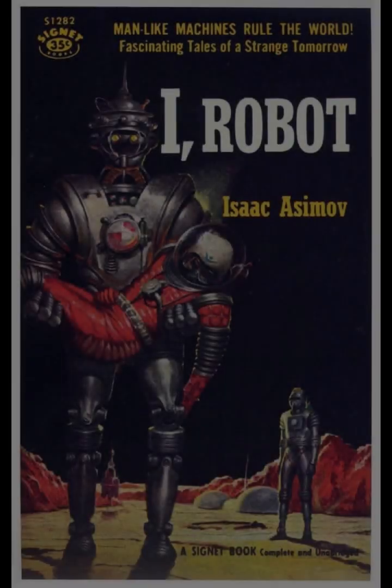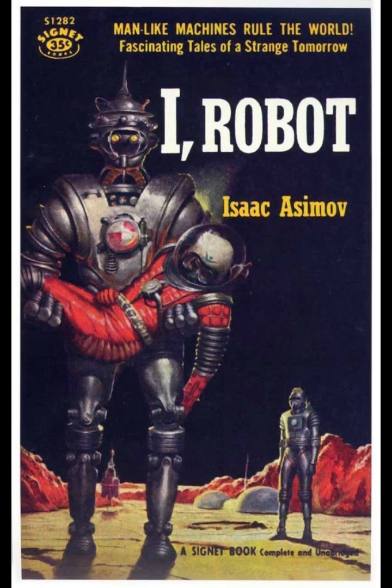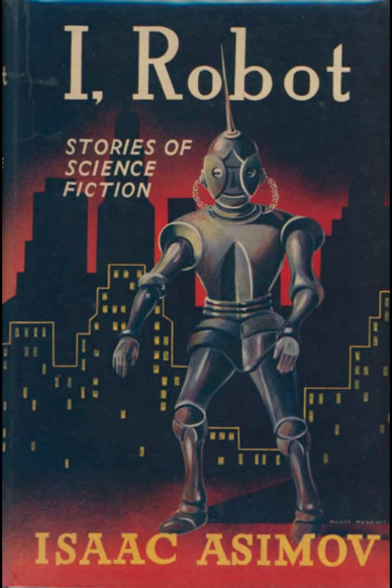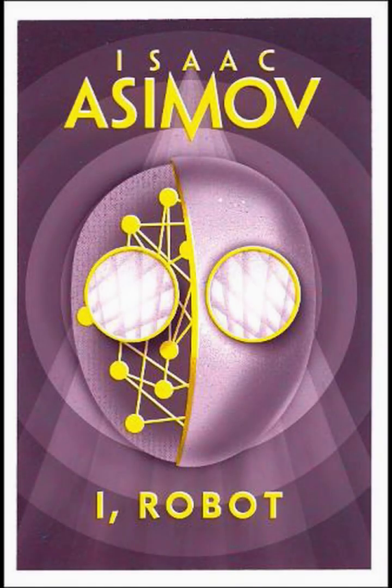Central to I, Robot are Asimov's Three Laws of Robotics, which are designed to govern the behavior of robots and ensure their function in a manner that is beneficial to humanity. These laws are: a robot may not injure a human being or, through inaction, allow a human being to come to harm; a robot must obey the orders given it by human beings except where such orders would conflict with the first law; and a robot must protect its own existence as long as such protection does not conflict with the first or second laws.